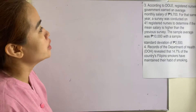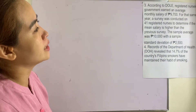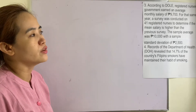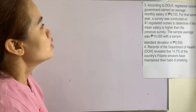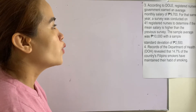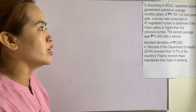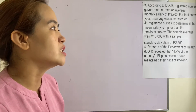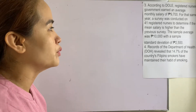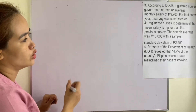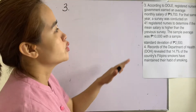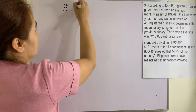Number three: according to DOLE, registered nurses in government earned an average monthly salary of 9,700. For that same year, a survey was conducted on 41 registered nurses to determine if the mean salary is higher than the previous survey. The sample average was 10,000 with a sample standard deviation of 2,500. Again, we are only after the parameter — therefore the average monthly salary of registered nurses.